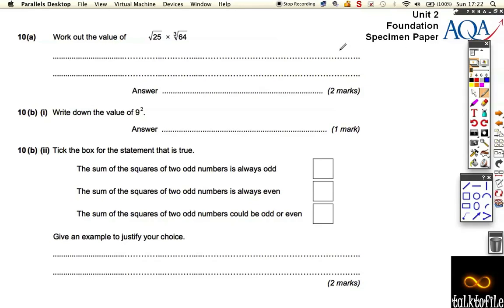Question number 10, getting quite far through the paper now. It says work out the value of this. Let's work at each bit individually. The square root of 25 is 5 because 5 times 5 is 25.